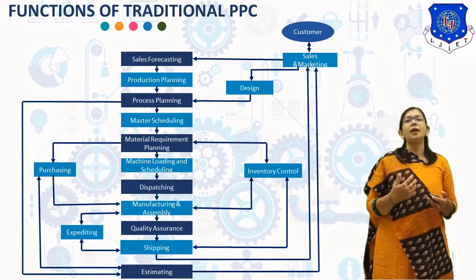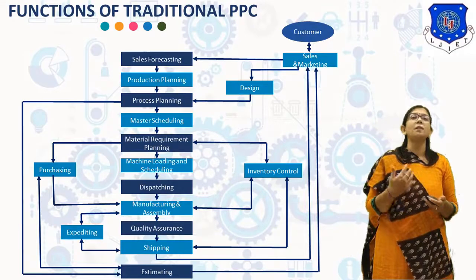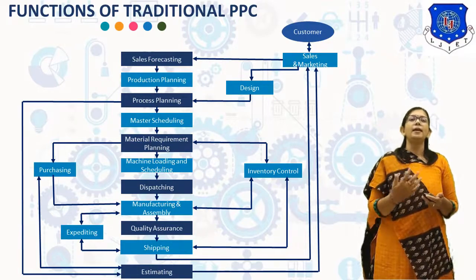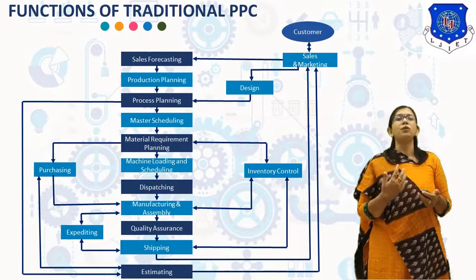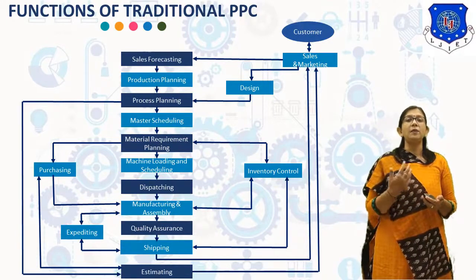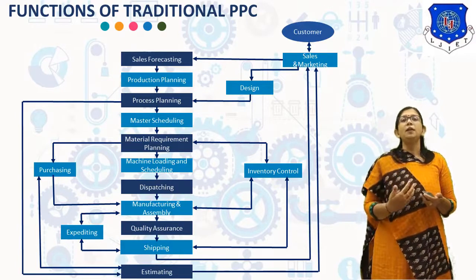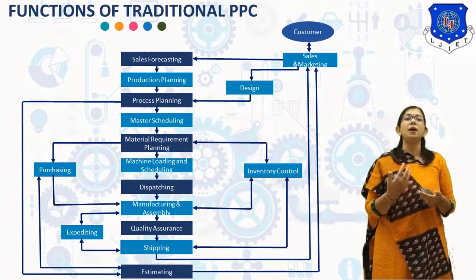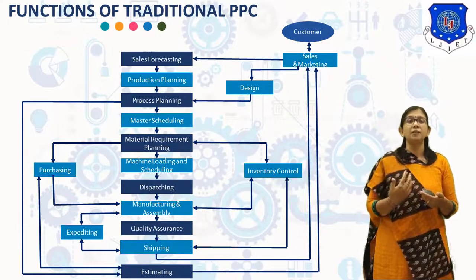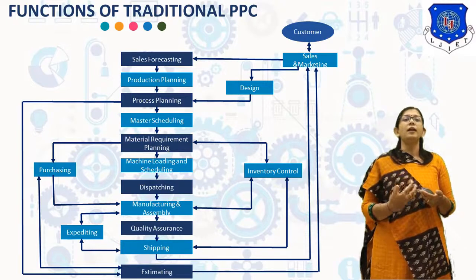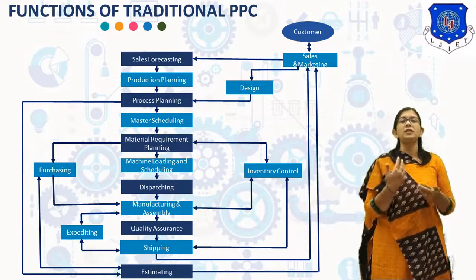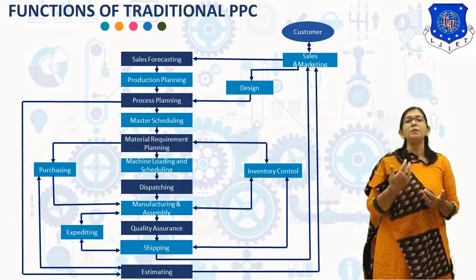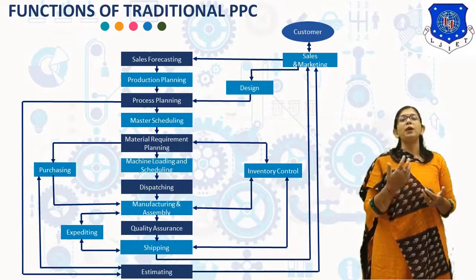Here you can see a block diagram demonstrating the various functions of Production Planning and Control. The first function is Sales Forecasting, which deals with predicting, analyzing, and projecting the future sales of the company's products. Long-term forecasts for 5 or more years are used for plant construction and equipment purchases. Intermediate-range forecasts for 1 to 3 years are used for equipment purchase, manpower, and long-lead-time materials. Short-term forecasts for 3 to 6 months are used for material procurement, production, and scheduling.